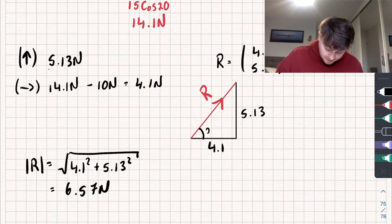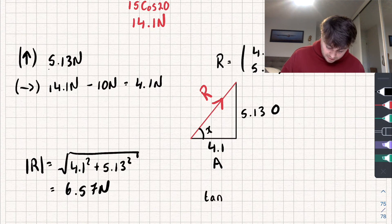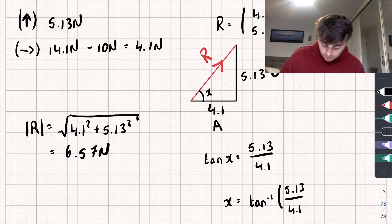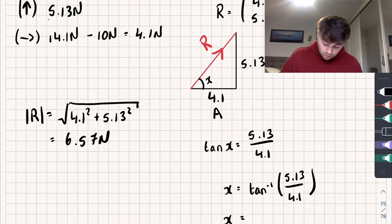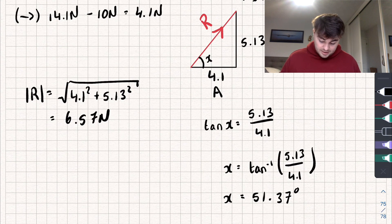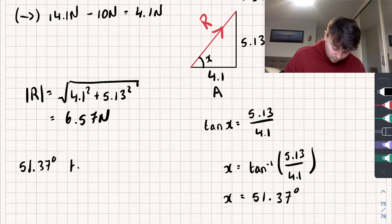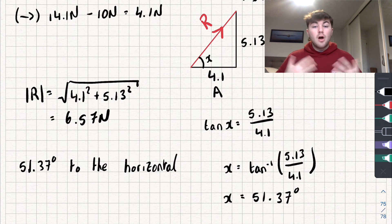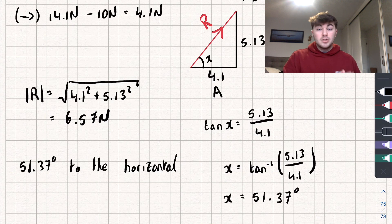To find the direction — the angle to the horizontal — I use trigonometry. I have the opposite side (5.13) and the adjacent side (4.1), so tan(x) = 5.13 / 4.1, therefore x = tan⁻¹(5.13 / 4.1) = 51.37 degrees to two decimal places. The resultant force acts at 51.37 degrees to the horizontal. Hopefully this video was useful — if it was, like, subscribe, and share, and go to my channel for more maths tutorials. Thanks for watching.